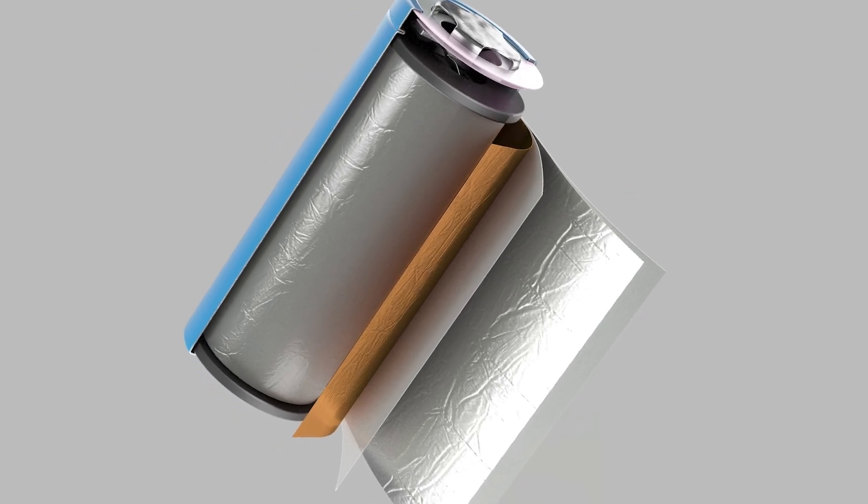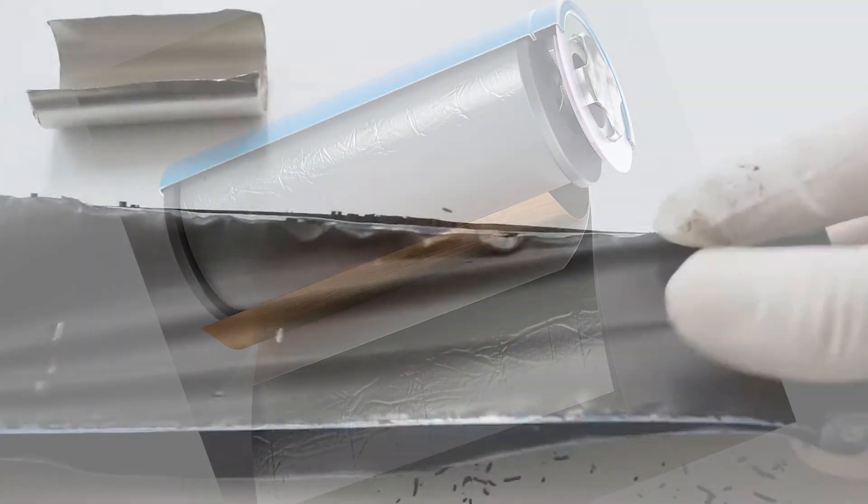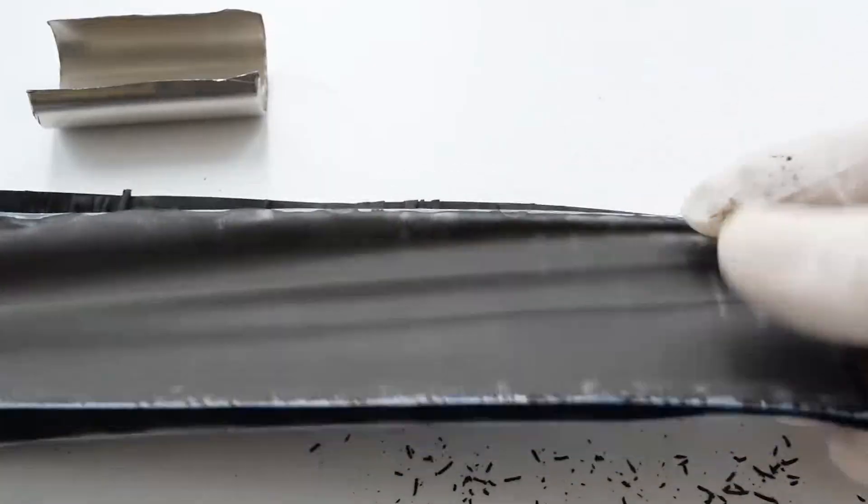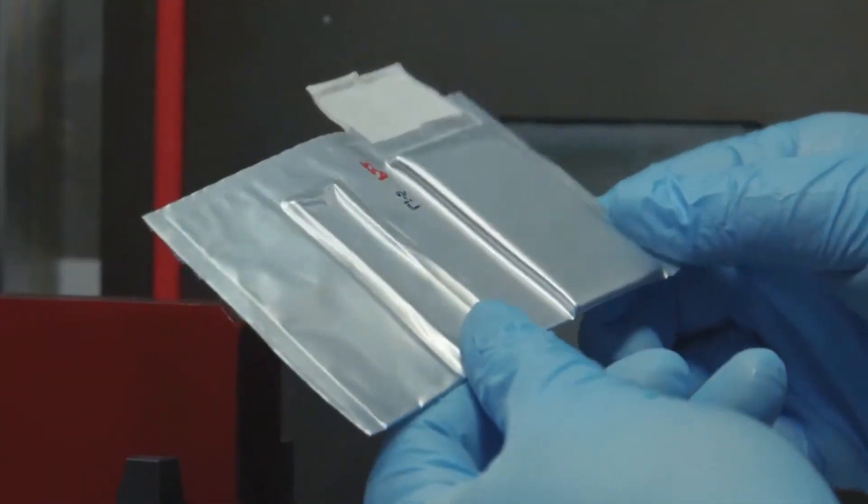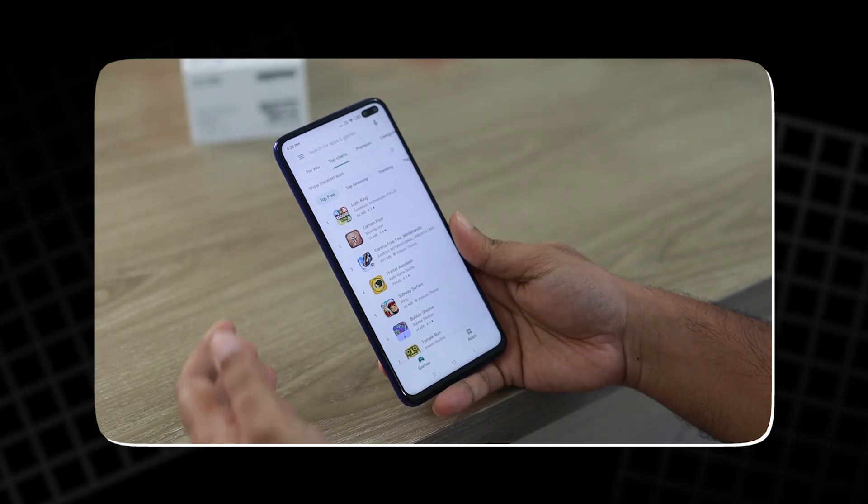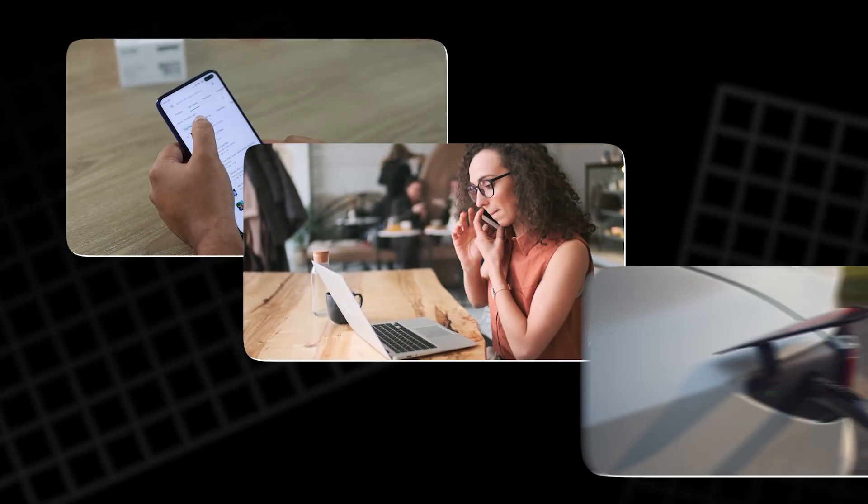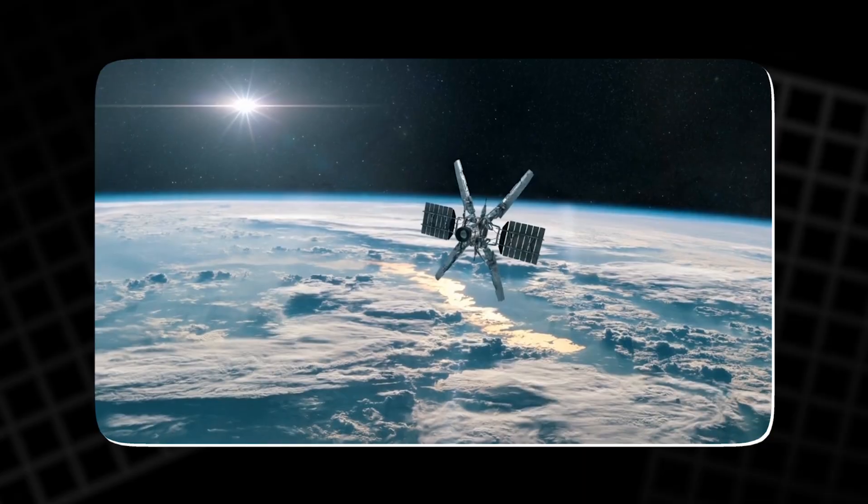This is what the inside of a lithium-ion battery looks like. Just thin sheets of foil and black paste. Yet this humble design powers your phone, your laptop, your car, even spacecraft far above Earth.